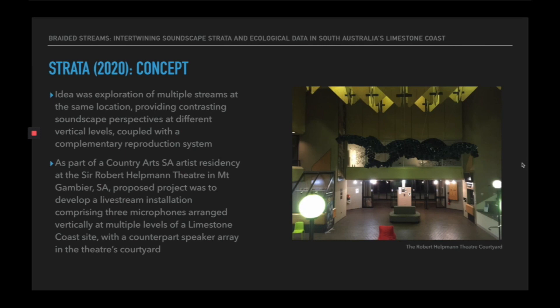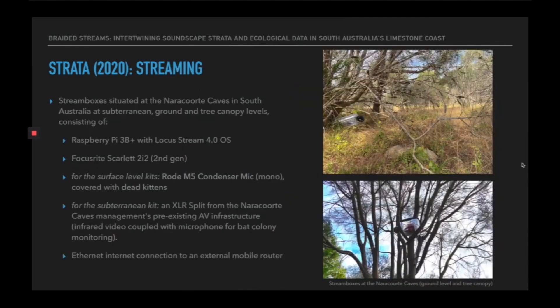As part of a Country Arts SA Artist Residency at the Sir Robert Heltman Theatre in Mount Gambier, South Australia, the proposed project was to develop a live stream installation comprising three microphones arranged vertically at multiple levels of a limestone coast site, with a counterpart speaker array in the theatre's courtyard.